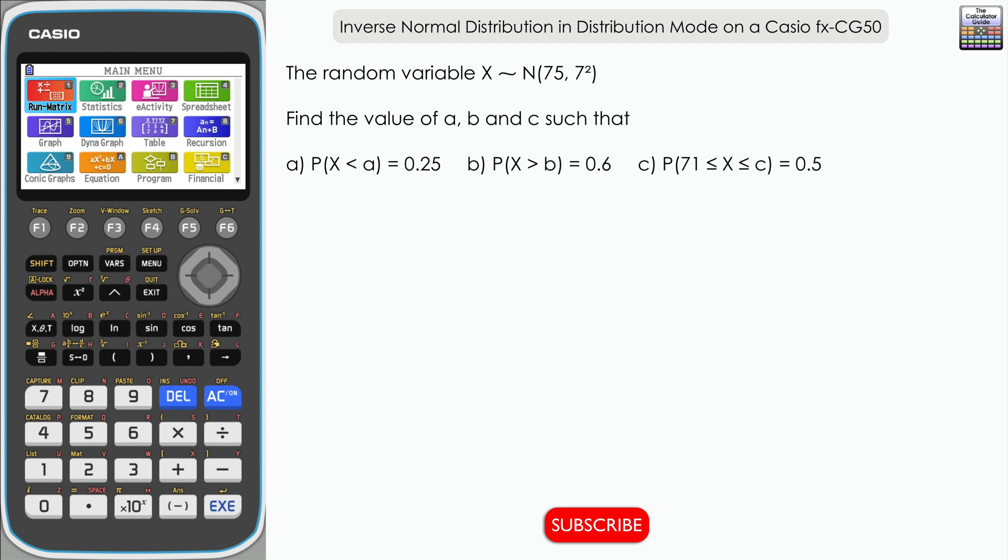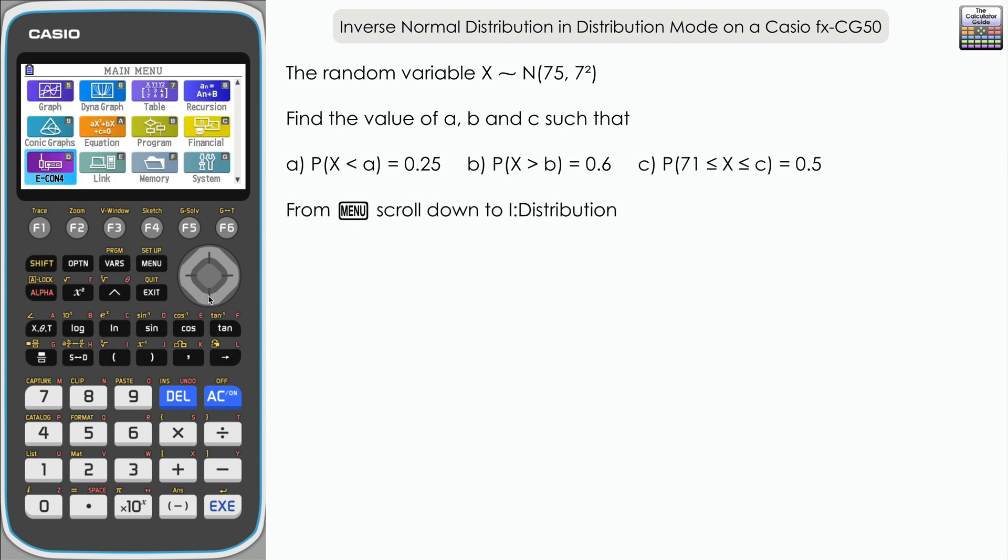We have to find the value of a, b, and c such that certain probabilities are satisfied. We're going to be using the distribution mode on the Casio FX-CG50 which was introduced in 2022. From the main menu, scroll down and select distribution.